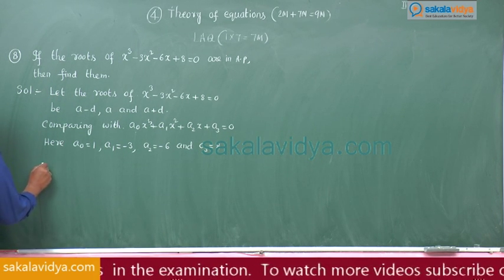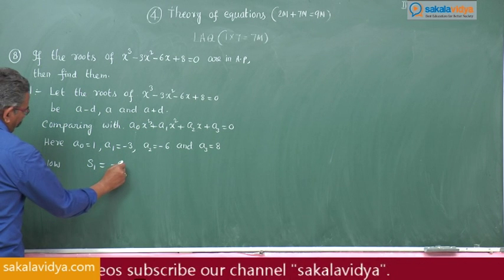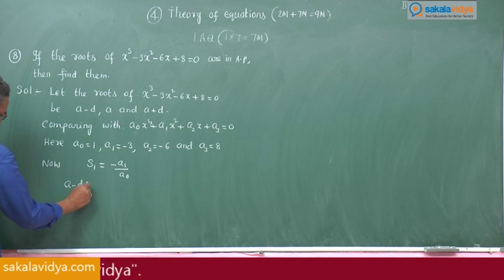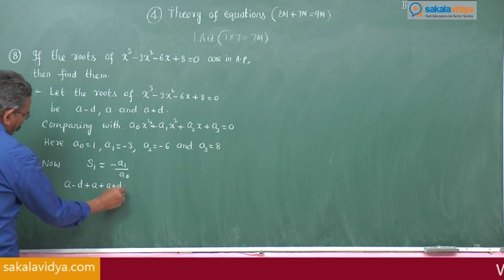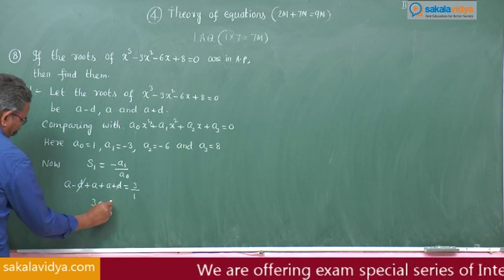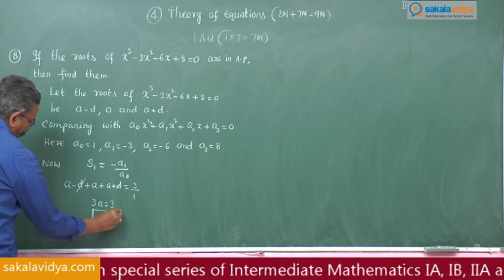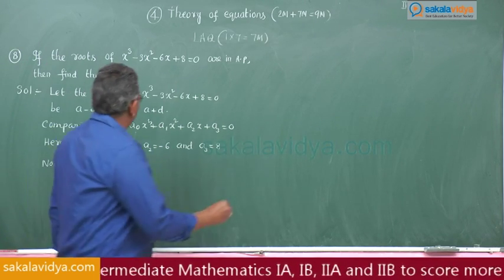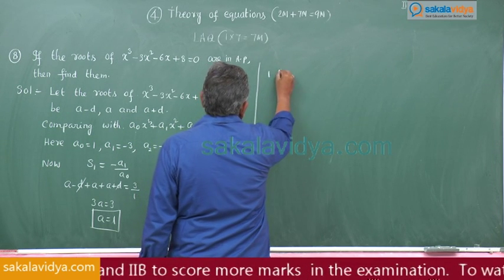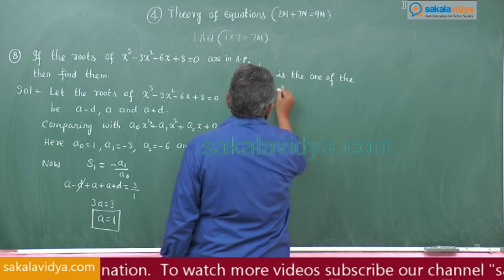Now, S₁, the sum of the roots, is -a₁/a₀. So (a - d) + a + (a + d) = 3/1. The d's cancel, giving 3a = 3, so a = 1. Therefore, 1 is one of the roots.